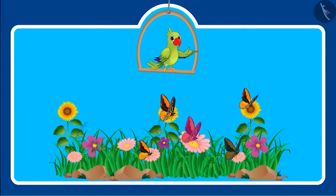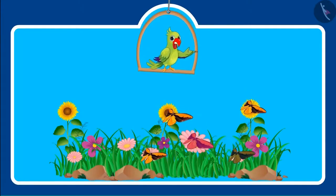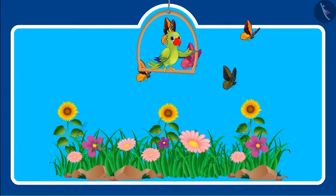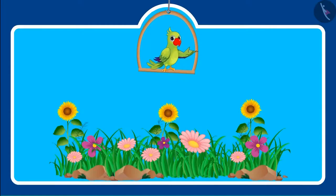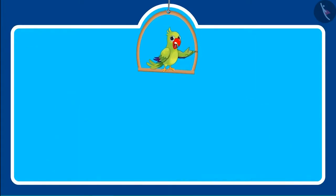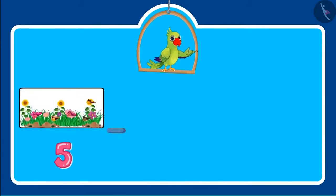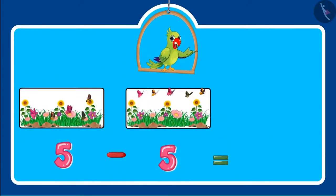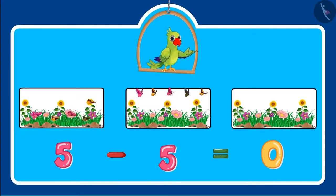So, children, now can you tell me if out of the five butterflies, all the five butterflies flew away, then how many butterflies are left? There are not even a single butterfly left on the flower. This means zero butterfly was left. You also got the same answer, right? Very good. So, children, did you see that if we subtract five from five, then zero is left?